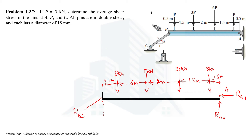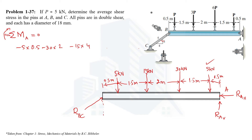Let's use the third condition of equilibrium: summation of all moments about any point equals zero. Taking moments about point A and treating clockwise moments as positive — the reactions passing through A produce no moment. The moment from the 5 kN force is anticlockwise (negative) with a moment arm of 0.5. Similarly, 30 kN has a moment arm of 2, 15 kN has a moment arm of 4, and the last 5 kN has a moment arm of 5.5.